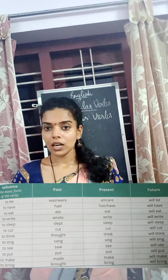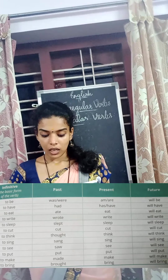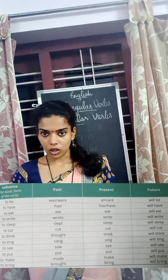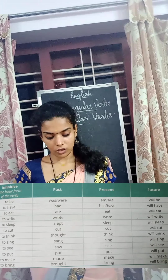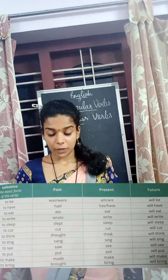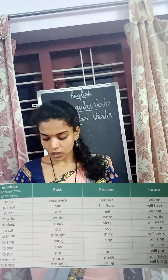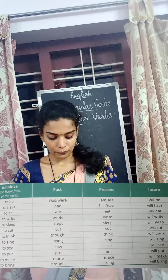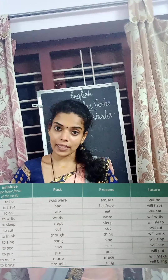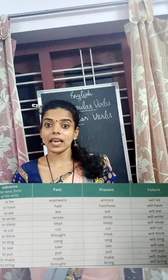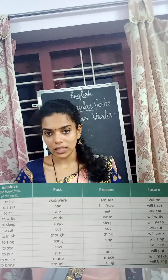For 'be': in past tense it is changed into 'was' or 'were'; present is 'am', 'is', or 'are'; future is 'will be'. For 'have': in past it is 'had'; present is 'has' or 'have'; future is 'will have'. For 'eat': in past it is 'ate' — not 'eated', it is 'ate'; present 'eat'; future 'will eat'.